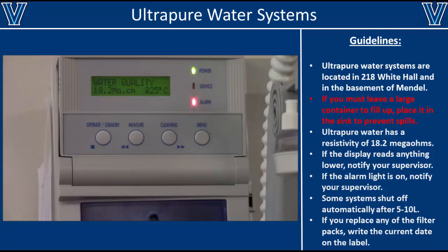Ultrapure water has a resistivity of 18.2 megaohms per centimeter, as shown on the readout here. If the resistivity is any lower, that means your water is not ultrapure and one of the filters in the system will likely need to be replaced. Notify your supervisor if this is the case, and also notify your supervisor if you observe any alarms on the system.